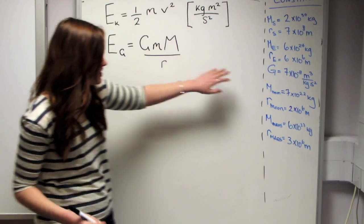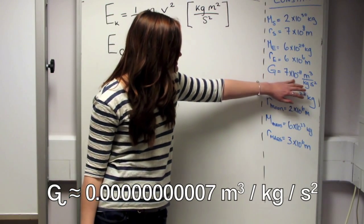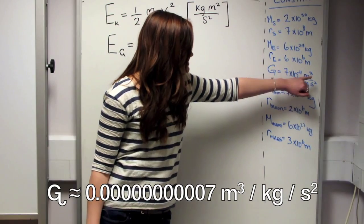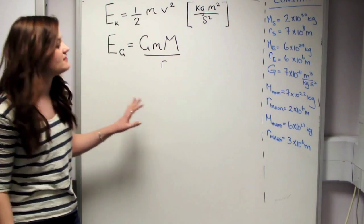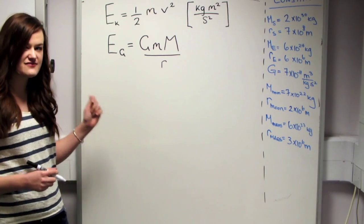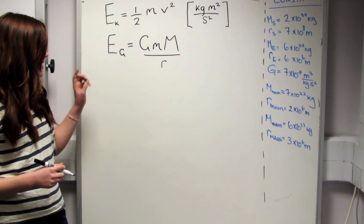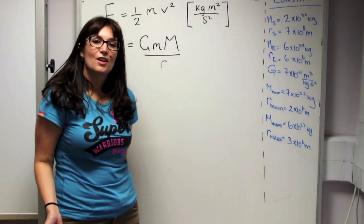Now, big G, which we've got written over here in our constants table, is about 7 times 10 to the minus 11 meters cubed per kilogram per second squared. And this number is what determines how strong the gravitational force is. And you can see that it's a really tiny number, and this is what makes the gravitational force the weakest of the forces.